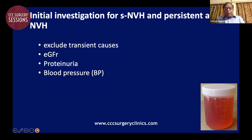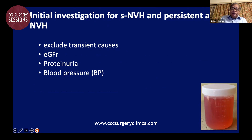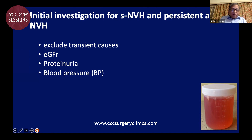What should be the initial investigation for non-visible hematuria — both symptomatic and persistent asymptomatic? First, exclude all transient causes. One should routinely calculate the eGFR, routinely check for proteinuria using the urinary albumin-to-creatinine ratio, and check the blood pressure. Even as general surgeons, knowledge of this investigation pathway is essential in surgical practice.